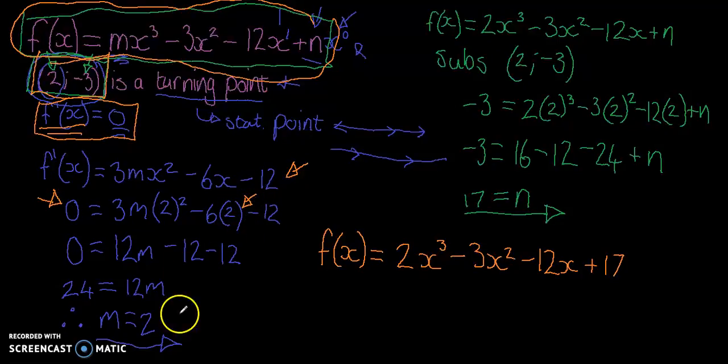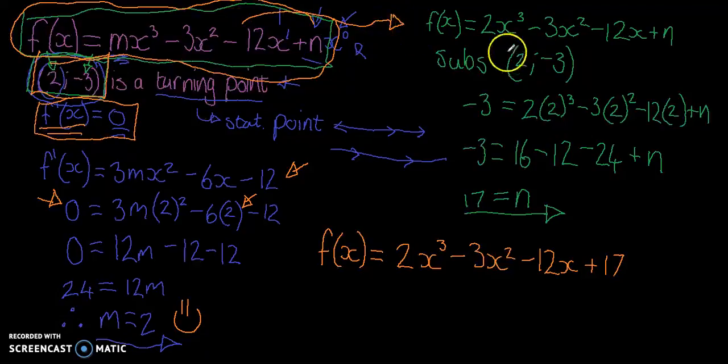Then we made it equal to zero and we substituted 2 in for x, and we found out what m was, and that made us smile. After that, we substituted it back into the function, and then used the whole of that point because it is a point on the curve. So substitute (2, -3): of course negative 3 is your y value so it goes over there, and then the 2 is your x value so it goes into all of those brackets.